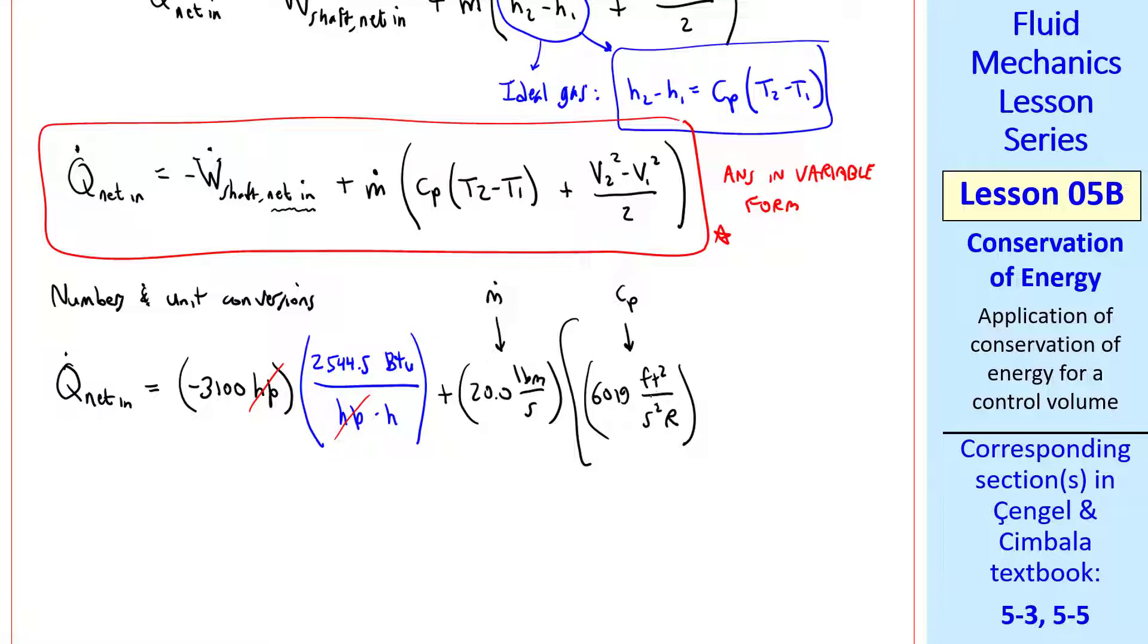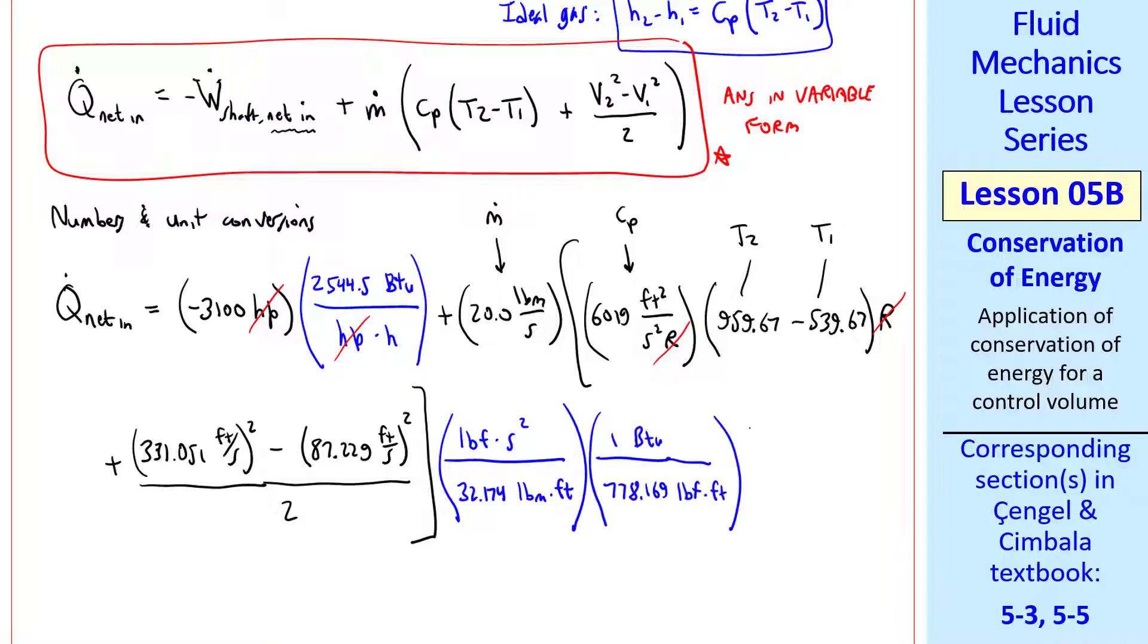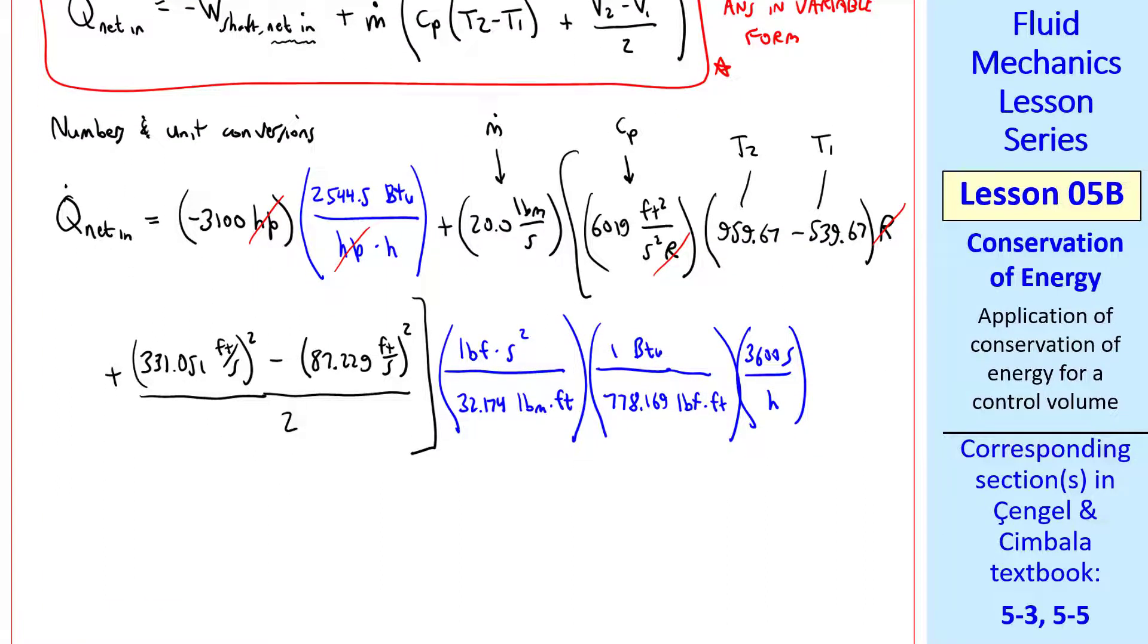Since the shaft power is net in and we are adding power, this is a negative value. I'll put a unity conversion factor in blue, 2544.5 BTU per horsepower hour. The horsepower units cancel. ṁ, I looked up c_p, which is actually a function of temperature. So I use the average temperature to get c_p in these English units. And this is T₂ and T₁ in Rankine. The Rankine units cancel also. And then finally this term, we know V₁ and we square it, and we know V₂ from previously and we square that and divide by 2. This is a lesson in unity conversion factors. So Q̇_net_in turns out to be -4.71 × 10⁵ BTU per hour.